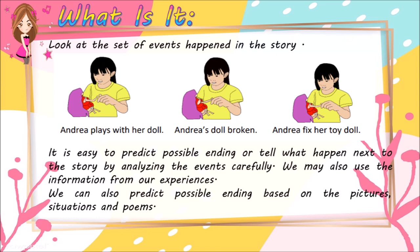Look at the set of events that happened in the story. The first picture shows Andrea plays with her doll. The second one shows Andrea's doll broken. And the last picture shows Andrea fixed her toy doll. It is easy to predict possible endings or tell what happened next by analyzing the events carefully. We may also use the information from our experiences. We can also predict possible endings based on the pictures, situations, and poems.